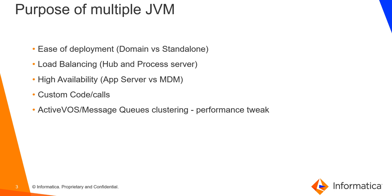The next one is high availability or clustering of the app server or MDM. When it comes to clustering, MDM doesn't require the app server to be in a cluster, but if the app server is clustered, the underlying applications like MDM or any custom code will of course also be part of the cluster. Coming to custom code — if we want to maintain custom code separately to track or improve performance, we can consider a different JVM for it.